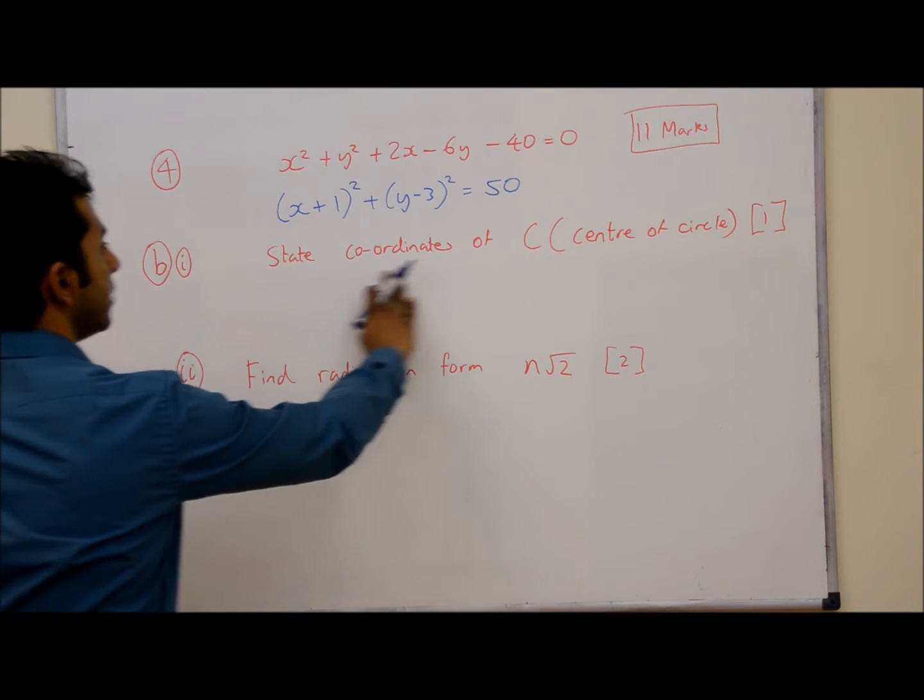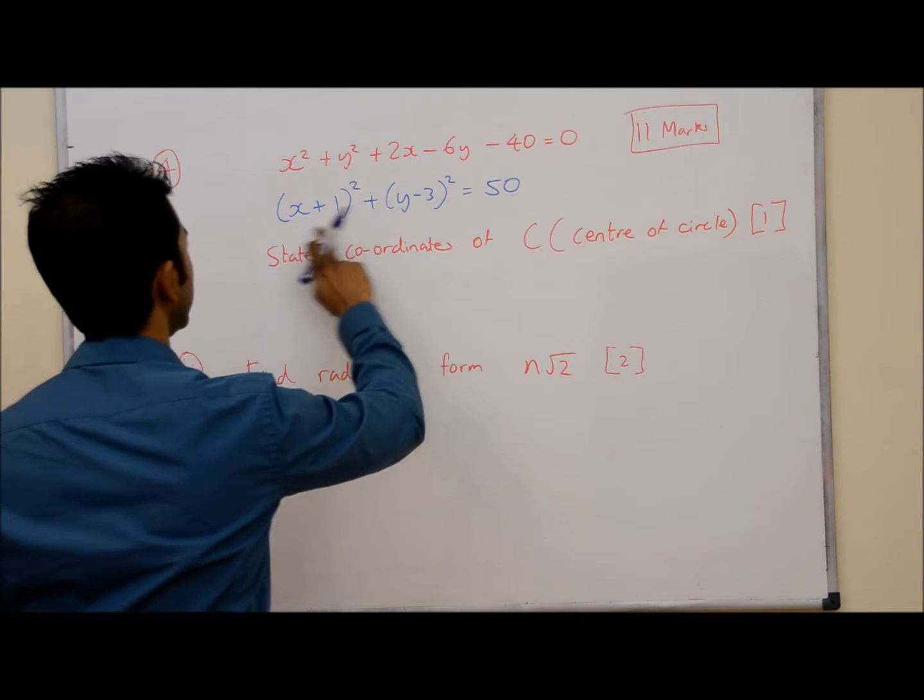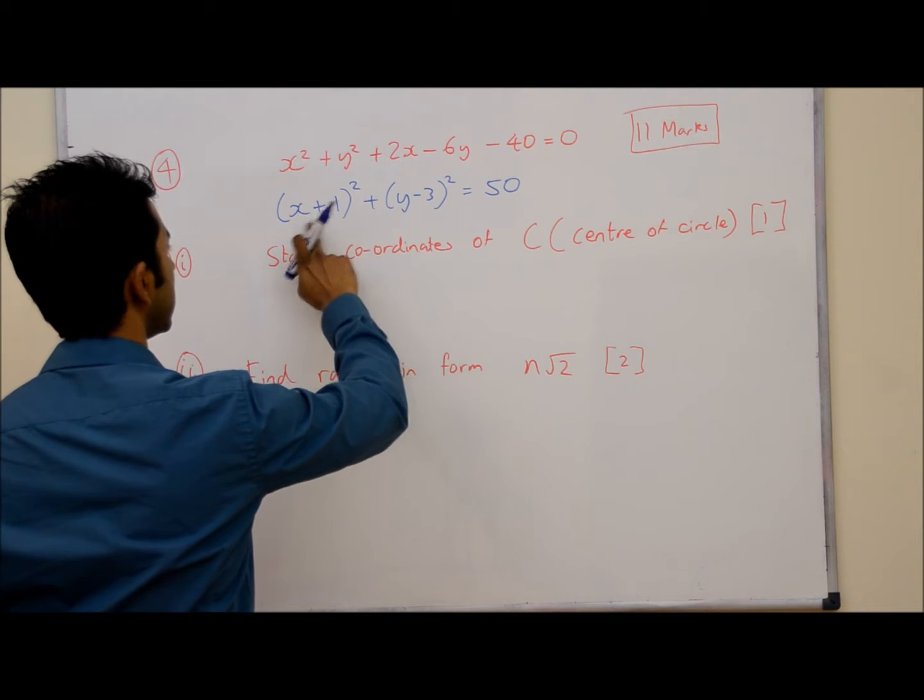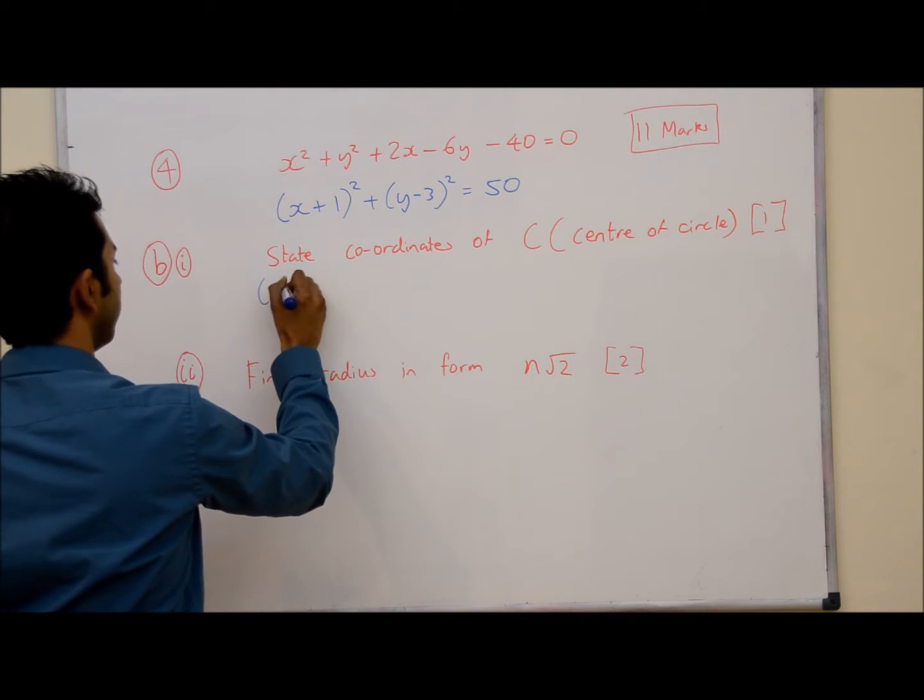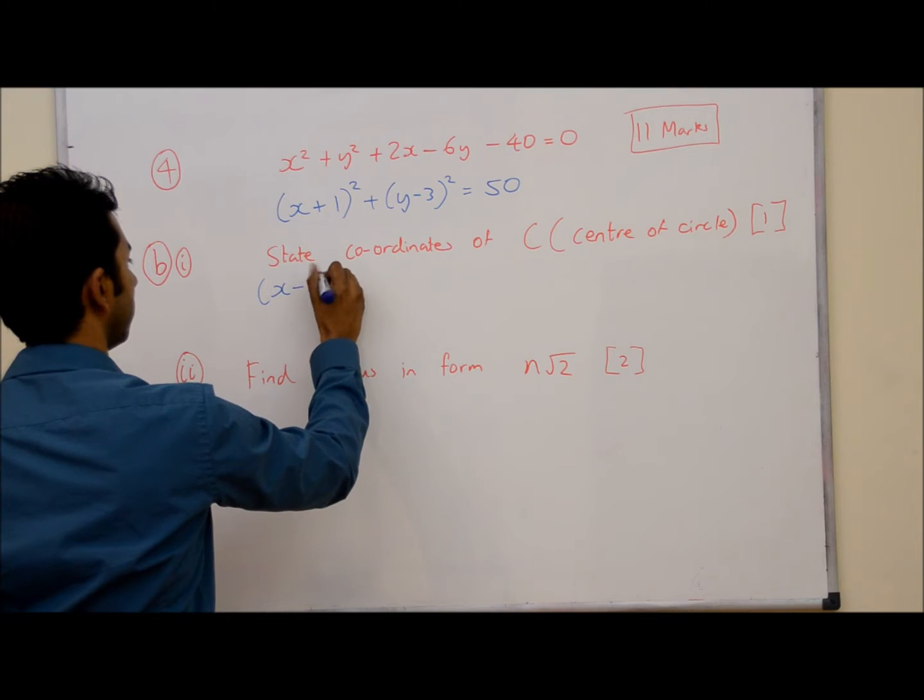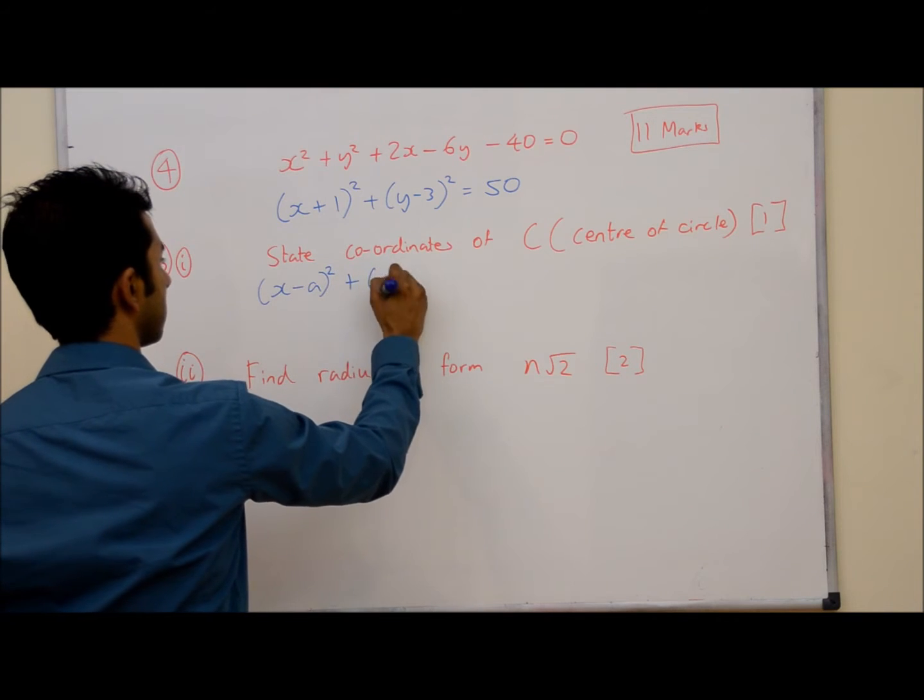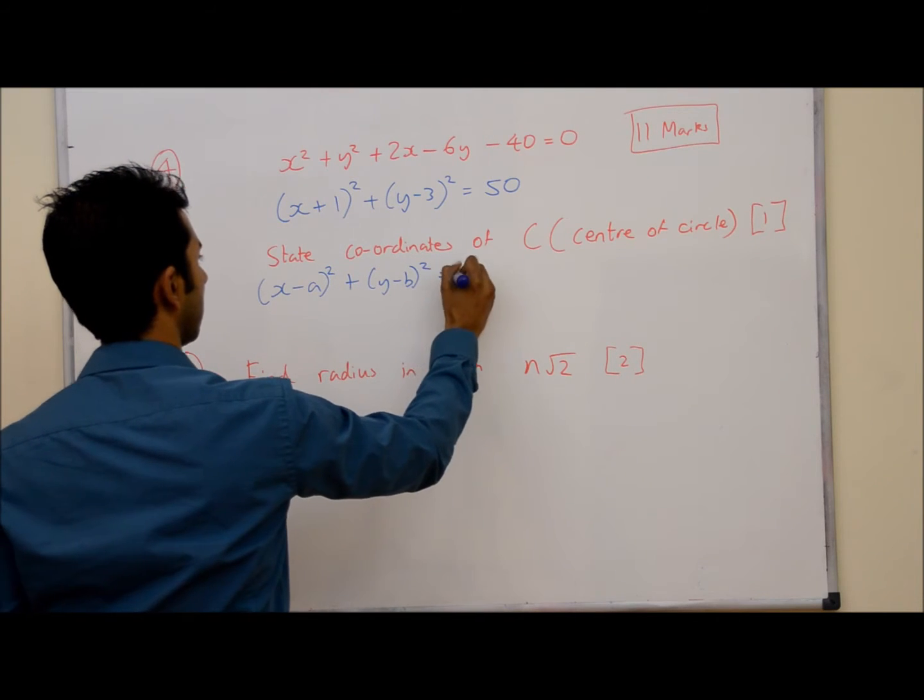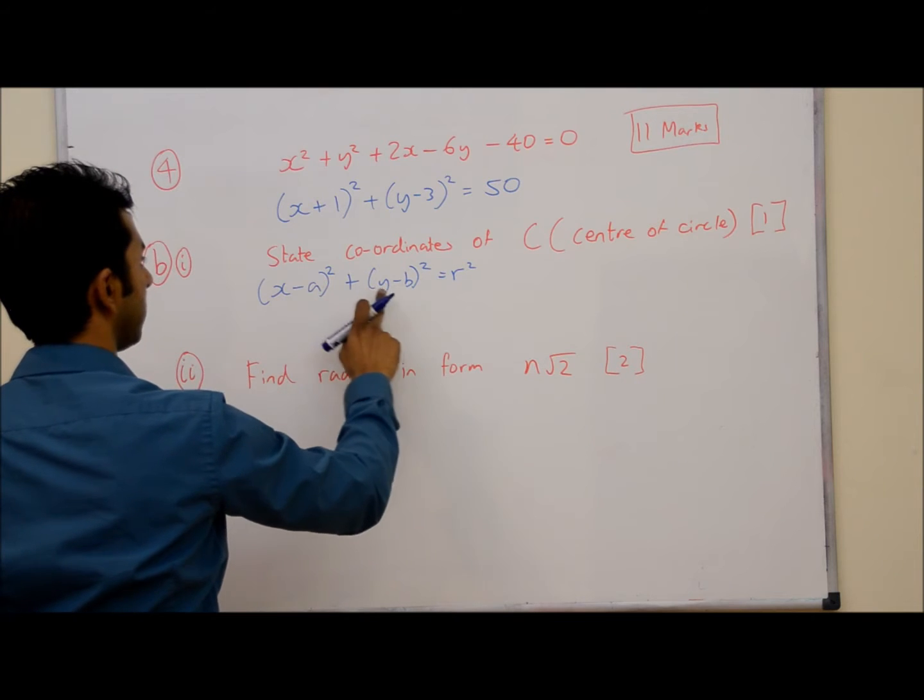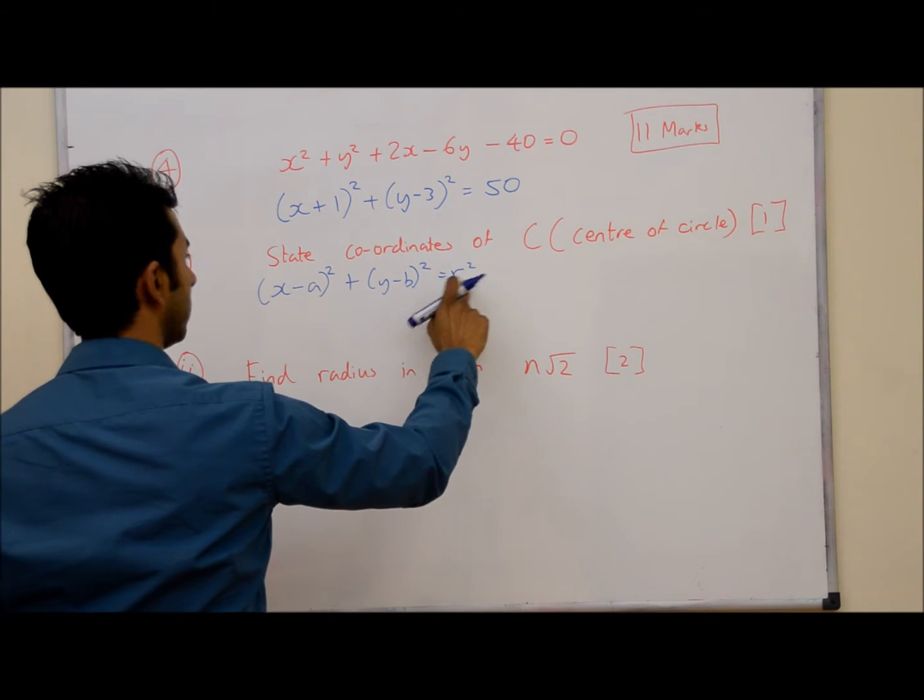If I want to find the centre of the circle, I need to use this answer from before, because this is the equation of my circle. And the general formula for the equation of a circle is this: x-a² plus y-b² equals r².